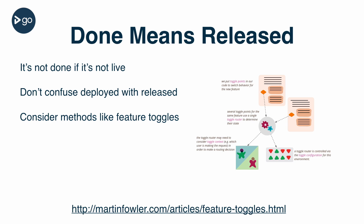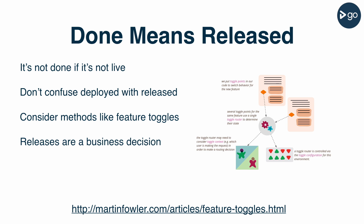In order to enable deployment of unreleased features, consider methods such as feature toggles, which allow you to disable features which are not ready for release. Keep in mind that one of the key reasons for implementing continuous delivery is to make software releases a business decision. There's nothing wrong with timing a release to an event for sales or marketing reasons. Having the new functionality already deployed and waiting to be turned on is a great way to do this.